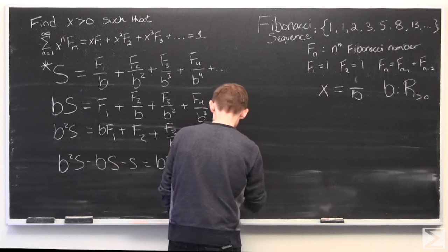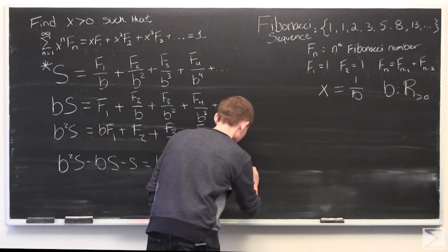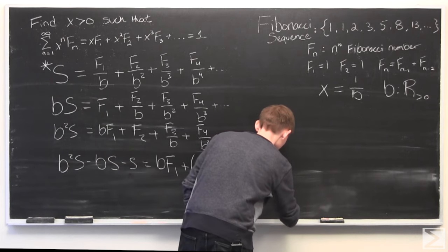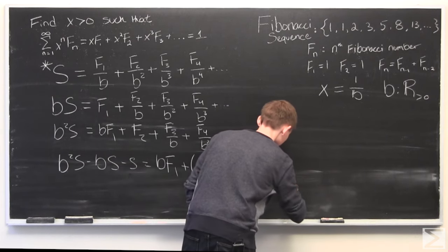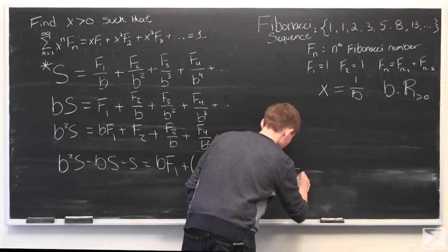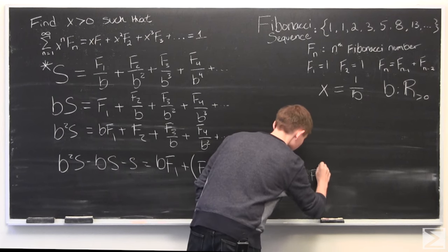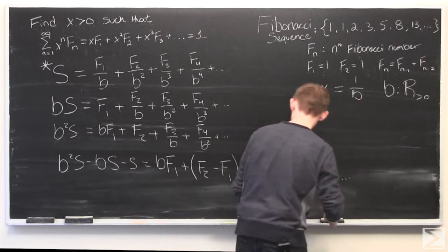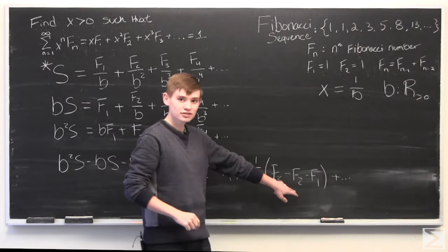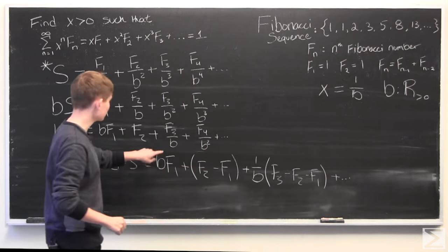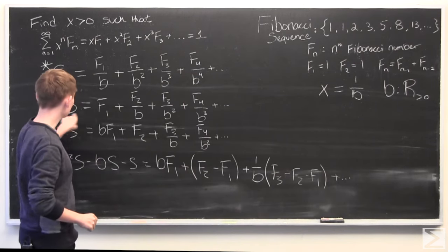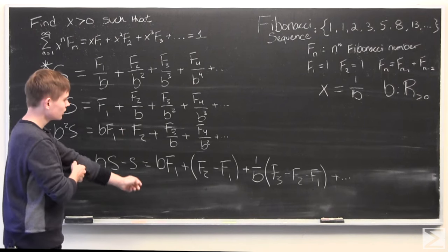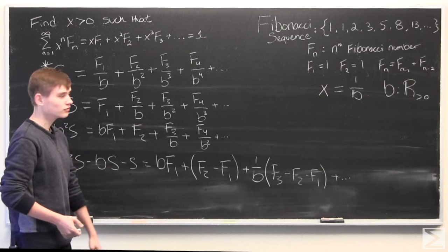And let's see. We have 1 over b times f3 minus f2 minus f1, because we have an f3, and then f2, f1, and we're subtracting these two. And this goes on to infinity.